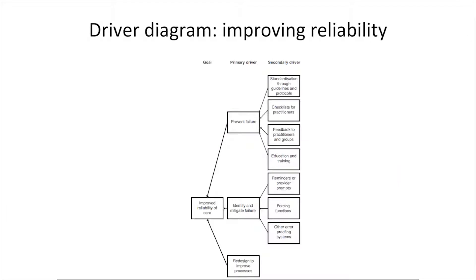Processes can also be summarised using a driver diagram. Driver diagrams enable high-level improvement goals to be translated into a logical set of underpinning goals, or primary drivers, and specific actions, or secondary drivers, which can also be converted to measures. The first stage involves preventing failure through standardisation, using guidelines and protocols, checklists for practitioners, feedback to individual staff or groups, and education and training. The next stage involves provider prompts and forcing functions — a means to prevent failure by ensuring a critical to quality process is completed before another action can be undertaken. The final stage involves further redesign of the system to ensure the process is as lean as possible, minimising wasteful steps, reducing rework, reducing the chances of failure, and maximising the efficient delivery of the process.